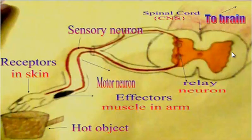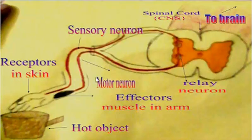Now let's talk about reflex arc. What is reflex arc? The nerve impulse pathway involved in a reflex action is known as reflex arc. For example, suppose a person incidentally touches a hot object or a hot plate.